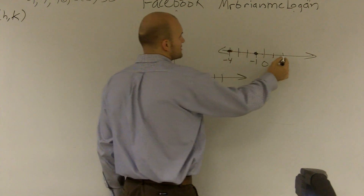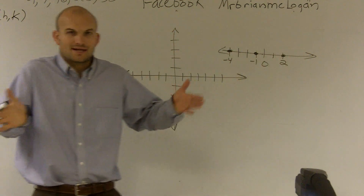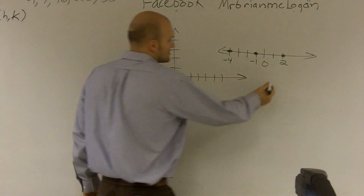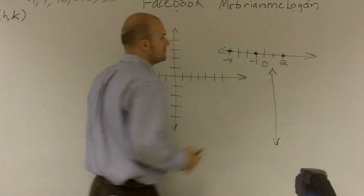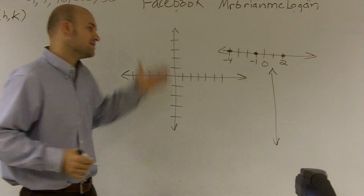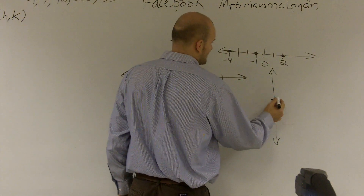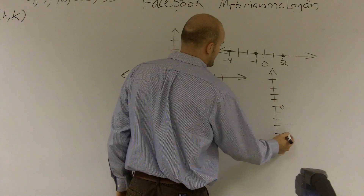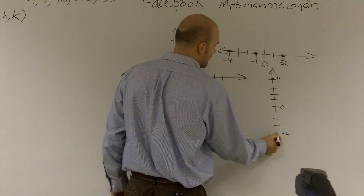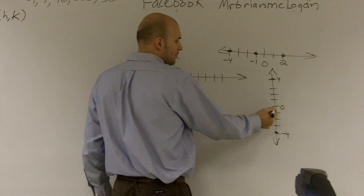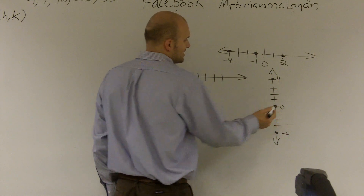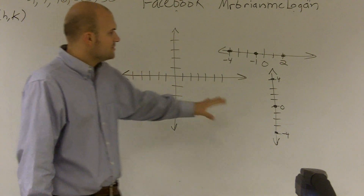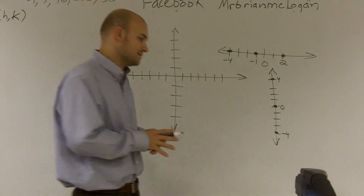So remember, the midpoint is kind of like the middle. We have an x-axis and we have a y-axis. When we're doing the midpoint, we're going to be finding the middle horizontally, and we're also going to be finding the midpoint vertically. You could also say, if I had a point 4 and 4, the midpoint horizontally or vertically would be 0. So just remember the midpoint is going to be the middle point between the two.